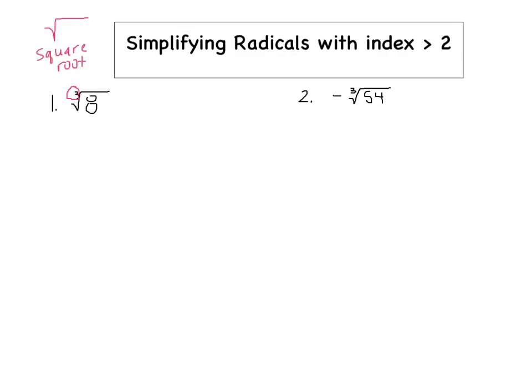So because there's a 3 here, we're going to call that the cube root. And then if there was a 4 there, we would say the 4th root, 5th root, and then so on. So what you're going to do is you're going to break these down just like you did when we were simplifying square roots. But this time, because it's a cube root, I'm going to be looking for 3 of the same number, as opposed to when we did square root, we were looking for 2 of the same number.